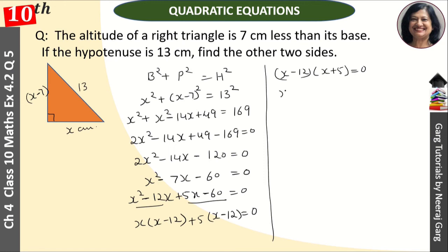It means x minus 12 is equal to 0, so x is equal to 12. And x plus 5 is equal to 0, then x is equal to minus 5.